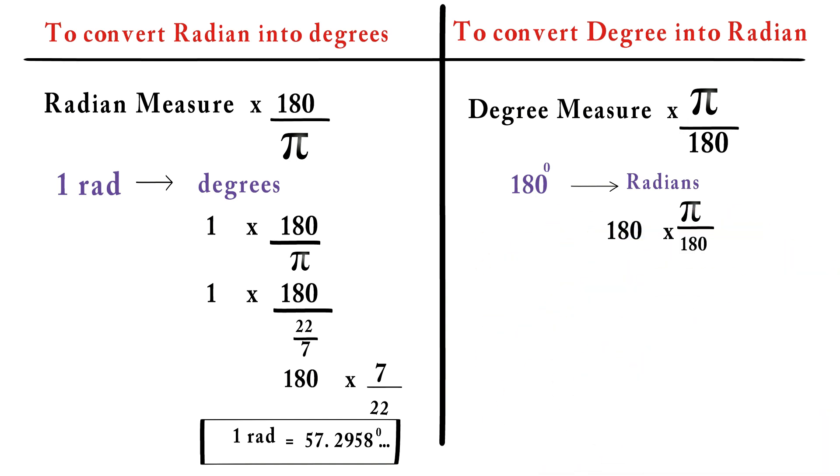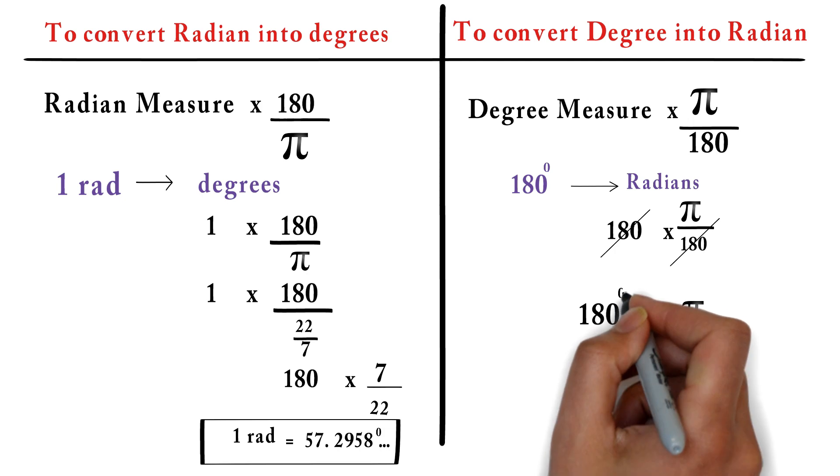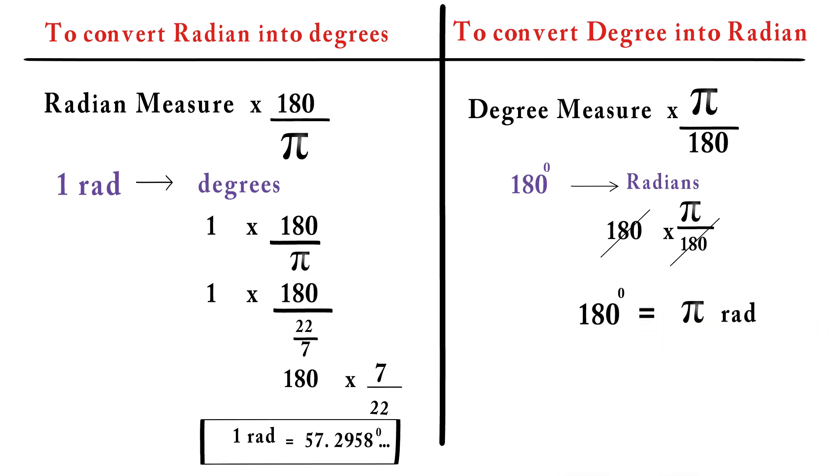So, 180 cancels with another 180 and what remains is π. Therefore, 180 degree is equal to π radian and vice versa.